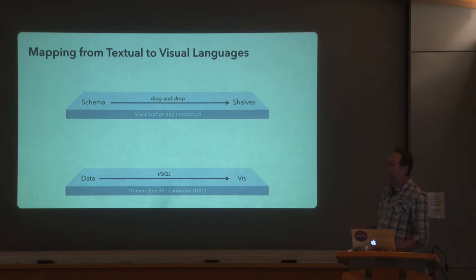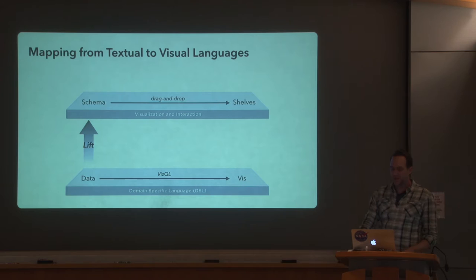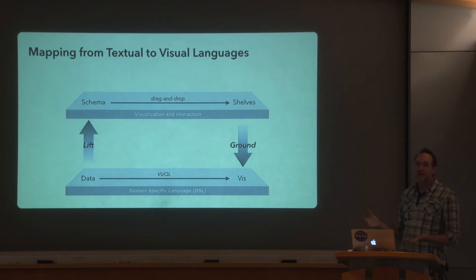We have a mapping between two different languages: one is a formal textual language more akin to programming, and the other is the visual language of these drag-and-drop shelves. We use notions from category theory — we take one domain, translate it into another domain, which is formally referred to as a lift. And then at the end, we can take that visual specification and ground it, or compile it back into the underlying language. This trick works well for a surprising variety of applications, particularly those dealing with data.